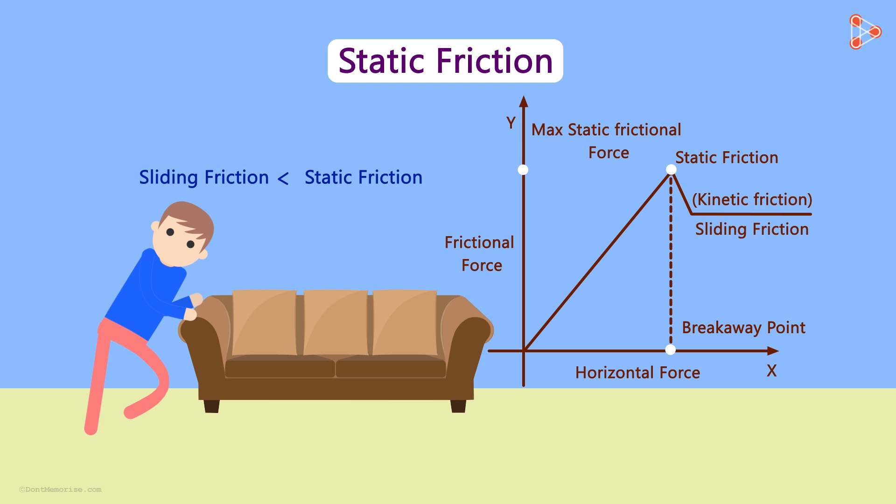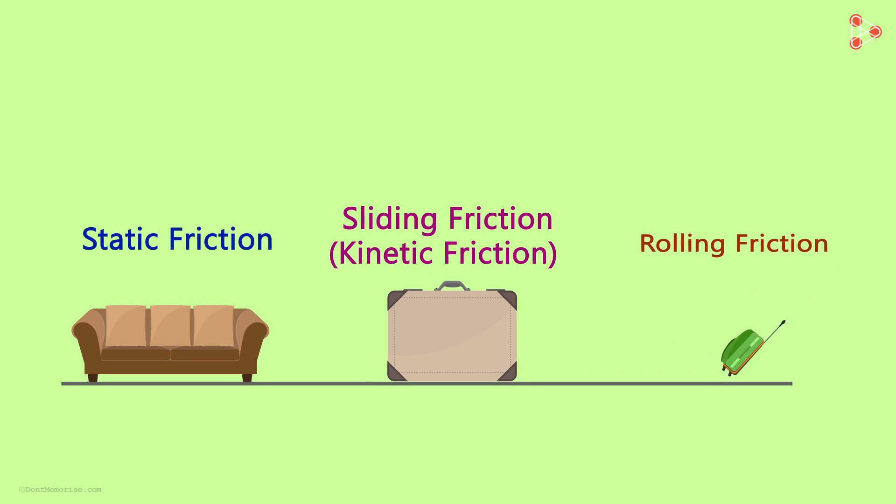So we've seen three kinds of friction so far: static friction, sliding friction and rolling friction. Can you place them in the increasing order of force being applied by each? Yes, static friction is more than the sliding friction, which will be more than the rolling friction.